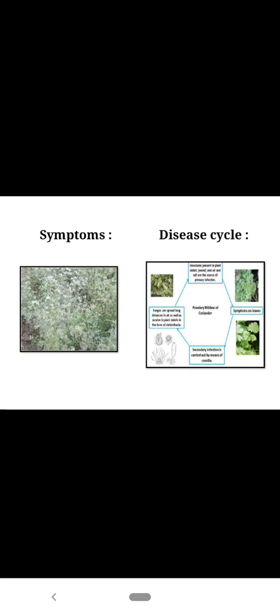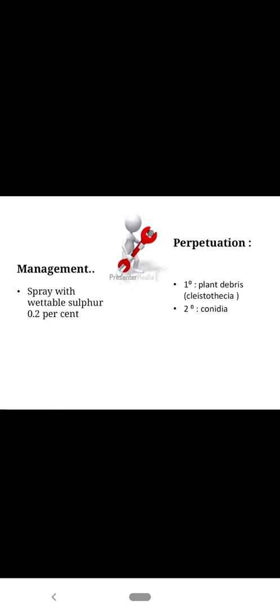You can clearly see in the diagram the ashy whitish appearance of the infected coriander. Management: spray with wettable sulfur at 0.2%. You can also go for triazole group of fungicides.